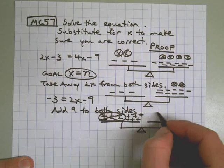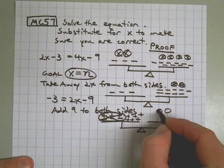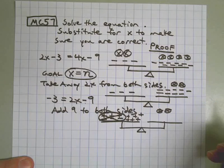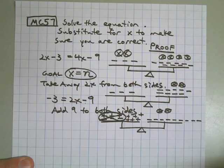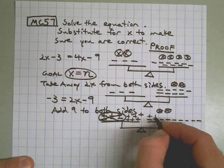On the other side, I still have my 2x's, and I have 9 negatives. And I'm adding 9 positives.